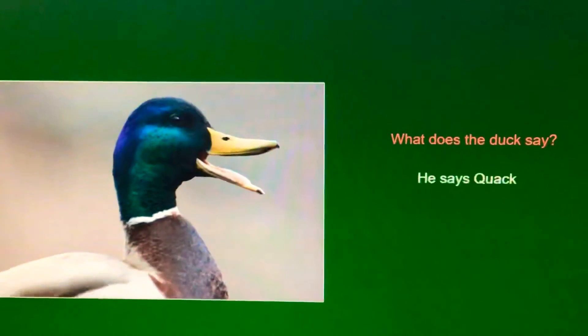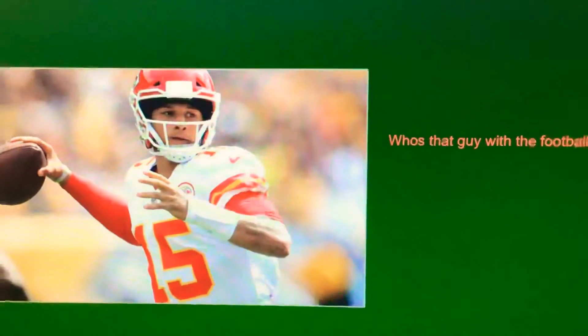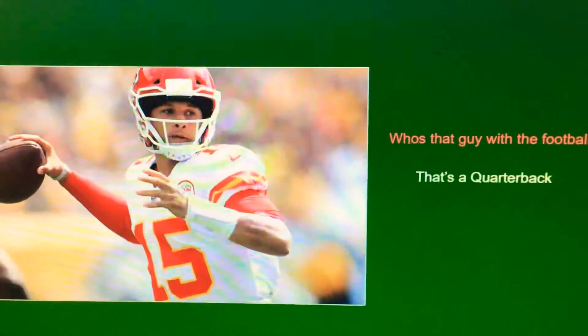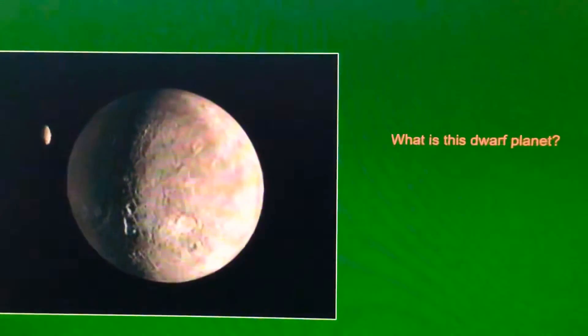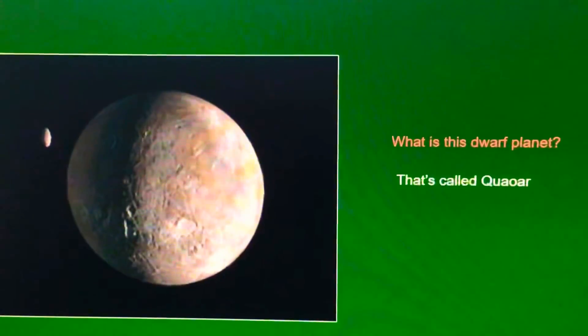What does a duck say? He says quack. Who's that guy with a football? That's the quarterback. What's this cozy blanket? That's called a quilt. Why can't I catch that rabbit? Because he's really quick.